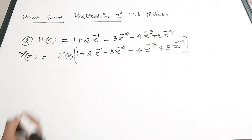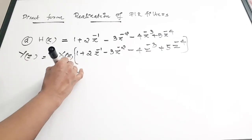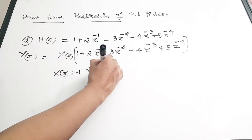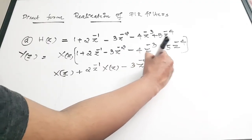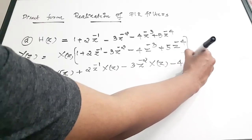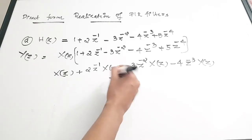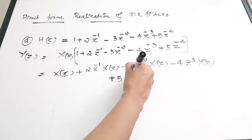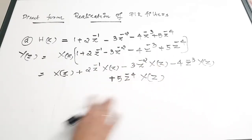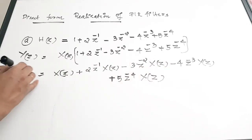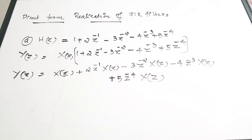Now open the bracket. You will get: Y(Z) = X(Z) + 2Z⁻¹·X(Z) − 3Z⁻²·X(Z) − 4Z⁻³·X(Z) + 5Z⁻⁴·X(Z). You only require this equation to realize the filter. You do not need to convert it back to discrete form or anything further. This equation is sufficient to draw the block diagram.